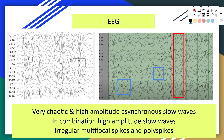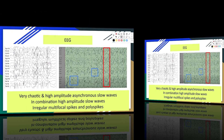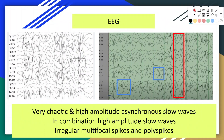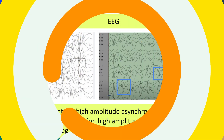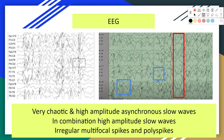Although clinical symptoms may vary from patient to patient, there is almost always hypsarrhythmia on the EEG. Hypsarrhythmia is characterized by very chaotic and high-amplitude asynchronous slow waves in combination with high-amplitude slow waves. Irregular multifocal spikes and polyspikes are also observed. The hypsarrhythmia pattern initially found in sleep recordings eventually presents itself in the awake record as well.